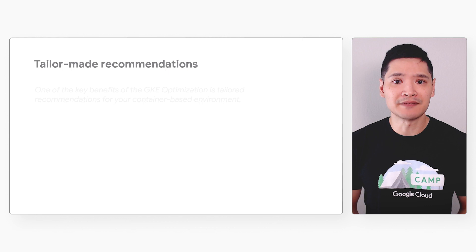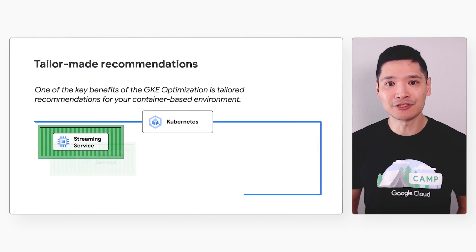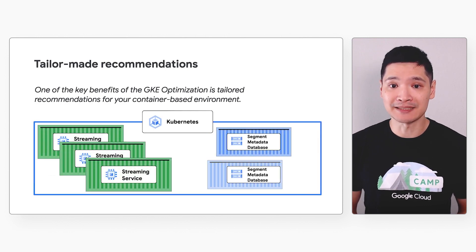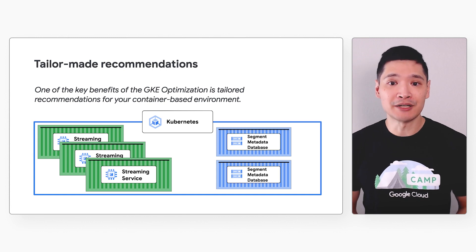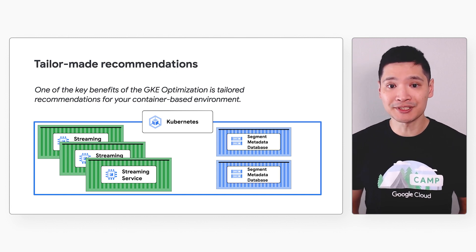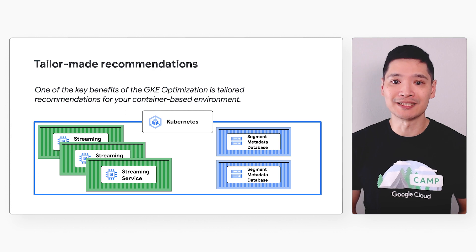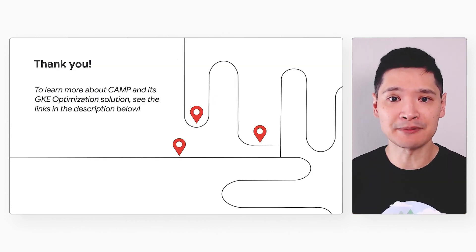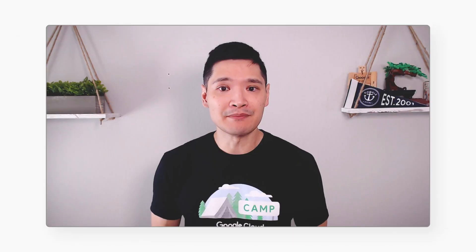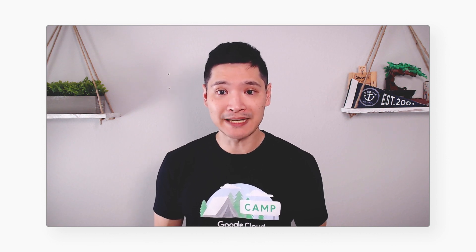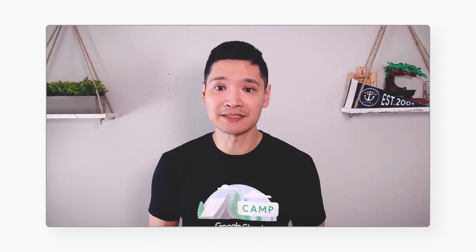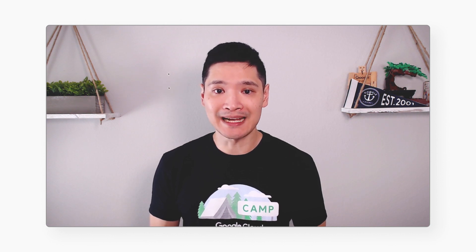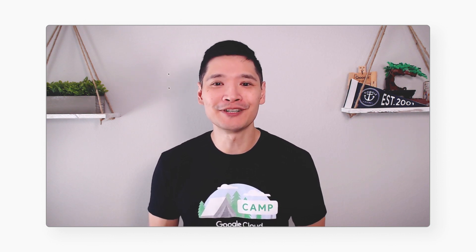One of the key benefits of the GKE Optimization offering is tailored recommendations for your container-based environment. Based on what we understand about your unique use case, we can recommend personalized adjustments based on these golden signals. If you'd like to learn more about CAMP and its GKE Optimization solution, see the links in the description below. And make sure to watch other videos in our CAMP series where we cover an overview of the CAMP program, best practices and tools for containerized development, and modernizing legacy applications. Thanks so much — look forward to seeing what you build!